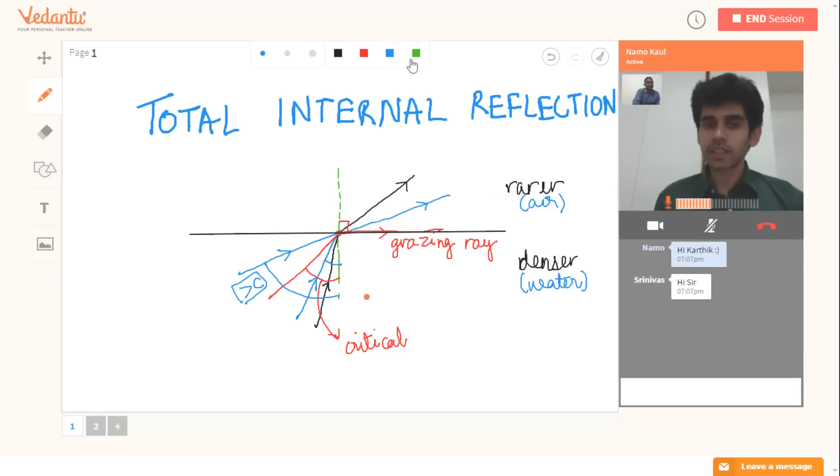So you understand that it will not be entering the air, right? Yes sir. So it will stay in the denser medium itself. Yes sir. So what do you think this is? I think since it is staying in a single medium, it should be reflection. So that is known as total internal reflection.